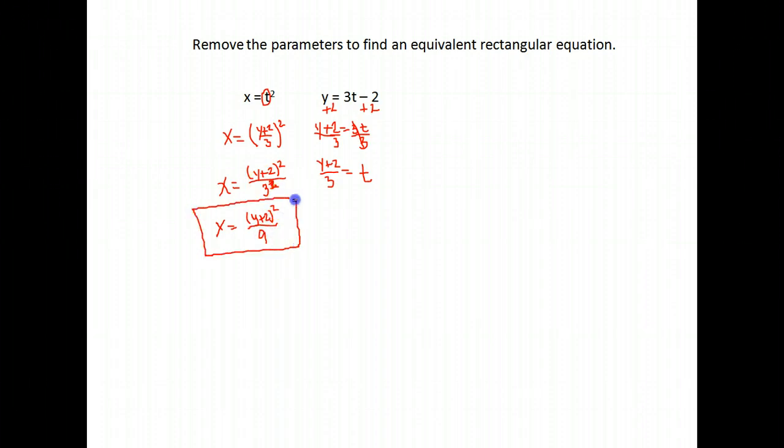Now this is how I would probably leave it. We can also write that as one ninth times y plus 2 squared. These are the same equation, just in two different forms. You can go ahead and square this, but it makes it a little bit uglier.